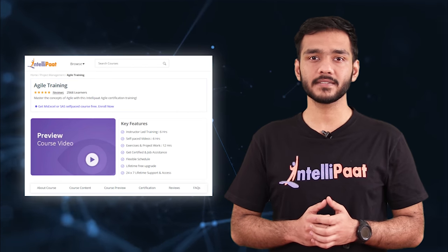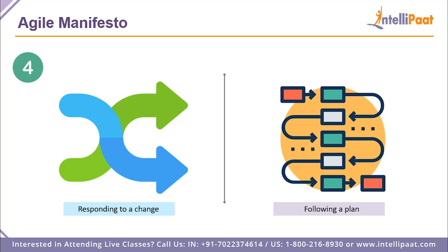So these are the different values promoted in Agile. In the manifesto, every item on the left has more value than the item on the right. This does not mean that the items on the right are not valued — the items on the left just have a lot more value. That's why we have to follow them every time we are trying to make a decision.